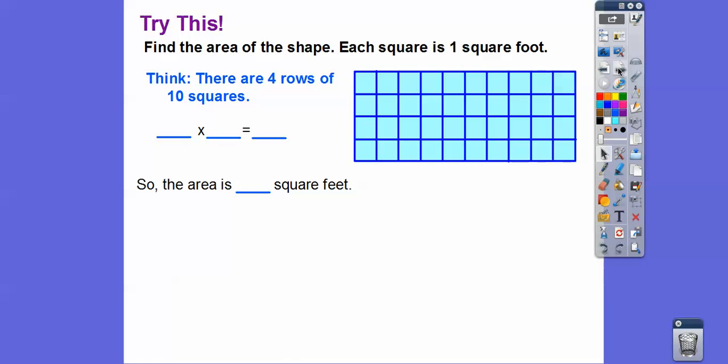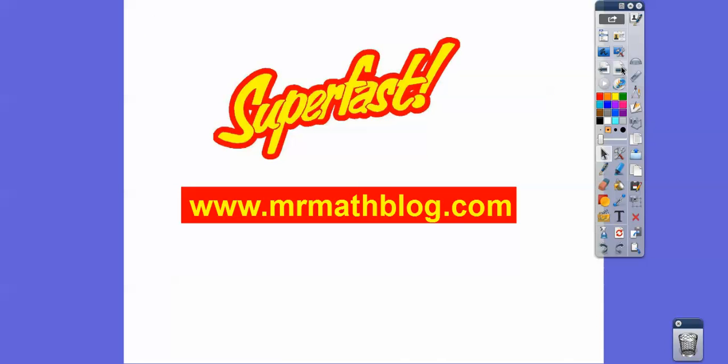So here's a nice one. So find the area of this rectangle here. Each square is one square foot. So there's four rows of 10 squares. So here's one, two, three, four—there's our four rows. There's 10 squares going across. So this is just going to give us four times 10. That's easy enough. That's 40. So the area is 40 square feet. I told you this is super fast. Take care.